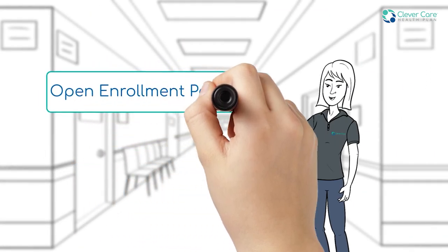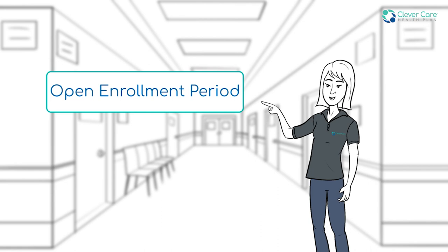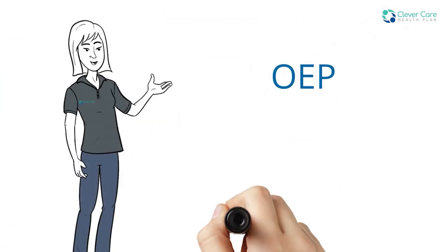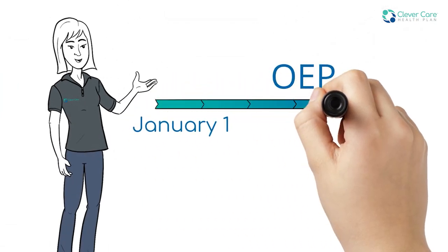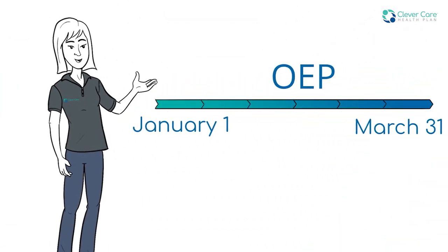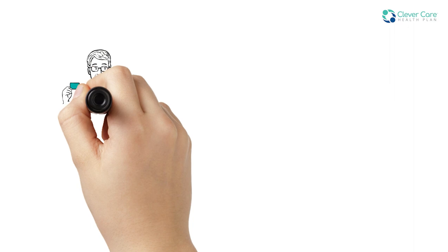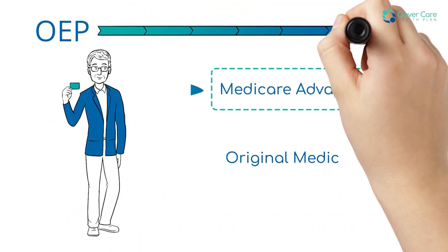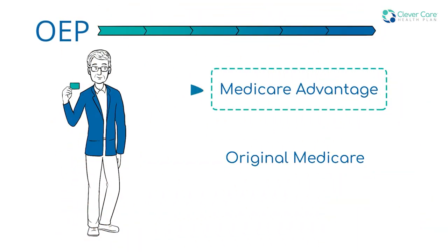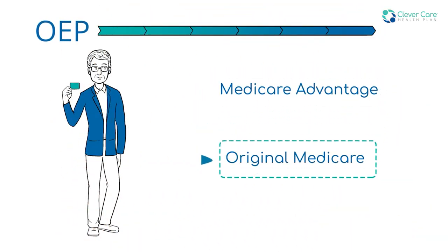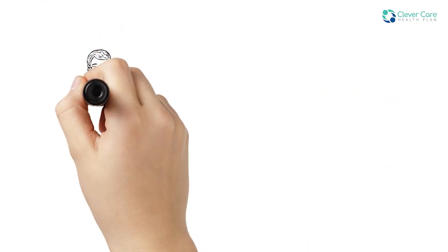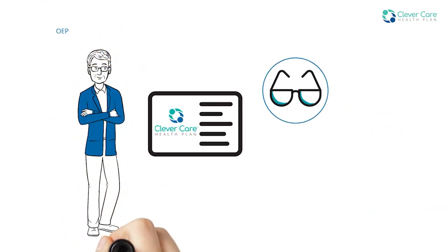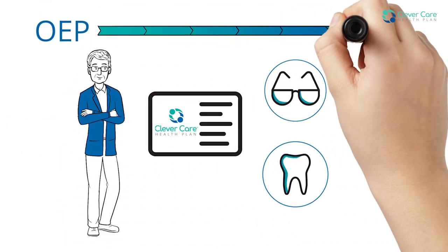The open enrollment period, or OEP, is January 1st to March 31st each year. During OEP, you can change your Medicare Advantage plan or go back to Original Medicare. You can change only once during this period.